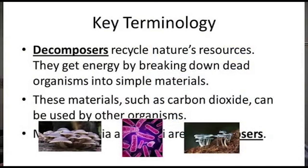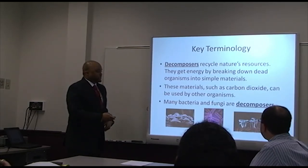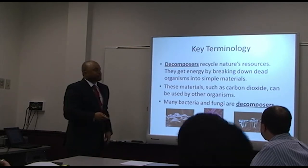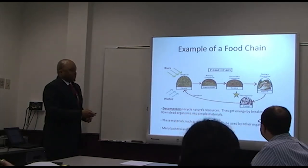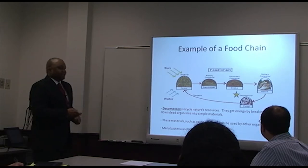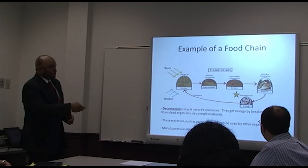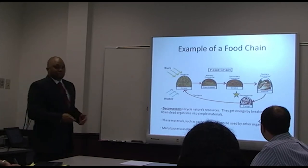Decomposers are another component of food chains. Decomposers recycle natural resources and produce byproducts like carbon dioxide and other nutrients that can be used by other organisms. For example, the carbon dioxide decomposers produce can be used by plants in photosynthesis. Many bacteria and fungi are decomposers. They get their energy by breaking down dead organisms, and these materials cycle back into other processes such as photosynthesis.